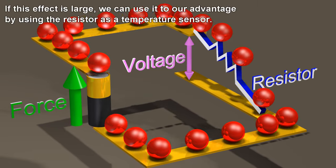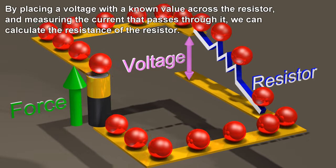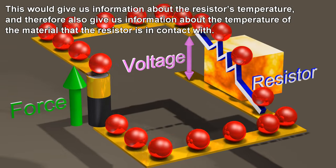If this effect is large, we can use it to our advantage by using the resistor as a temperature sensor. By placing a voltage with a known value across the resistor and measuring the current that passes through it, we can calculate the resistance of the resistor. This would give us information about the resistor's temperature, and therefore also give us information about the temperature of the material that the resistor is in contact with.